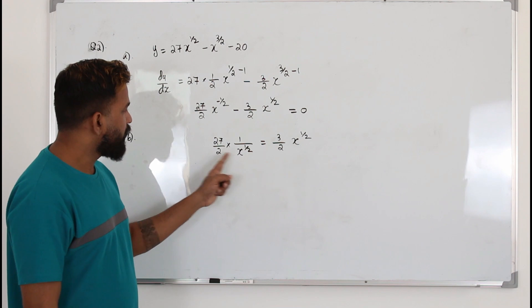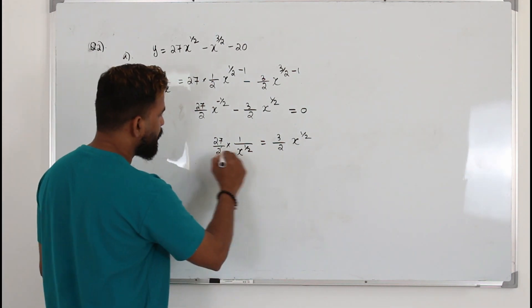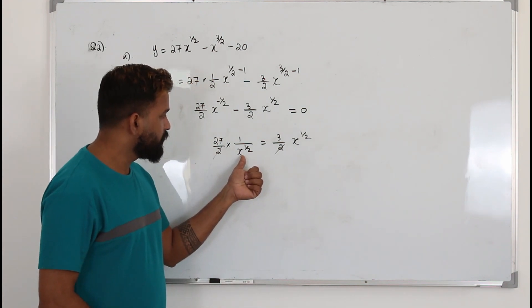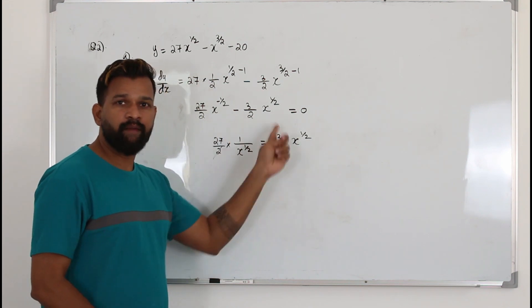Maybe you can get rid of the fraction by multiplying everything by 2. So that 2 will be cancelled. Now we have another fraction here. You see, you have x power half in the denominator. So multiply both sides by x power half.